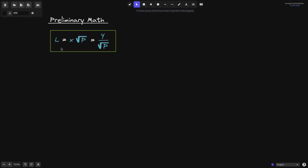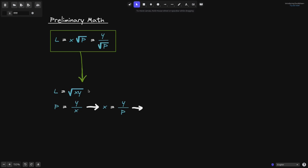We'll start with preliminary math. We'll prove that L is equal to X times the square root of P, and this will also be equal to Y divided by the square root of P. First, we'll start with the definition: L is equal to the square root of X times Y, and the current price P is equal to Y divided by X. We can rearrange this equation to say X is equal to Y divided by P.